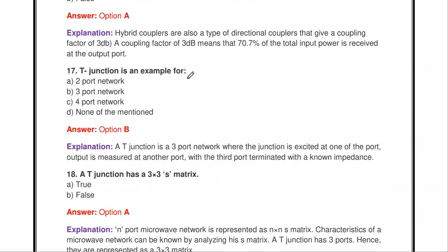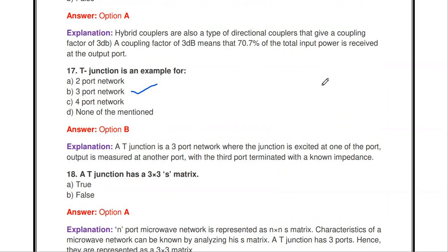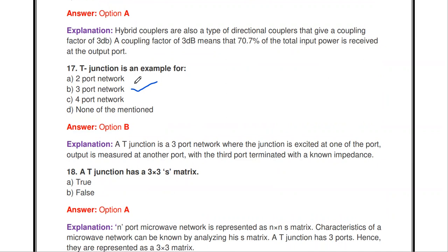Next question: the T-junction is an example for a two-port, three-port, four-port, or none of the above? The T-junction is an example of a three-port network. If input is applied at one port, it divides into two outputs. If input is applied at two ports, those values are added and output comes from the third port.